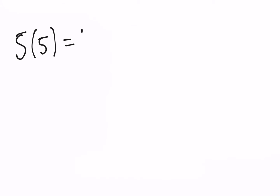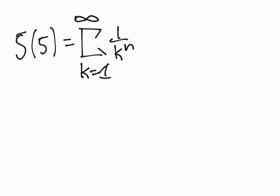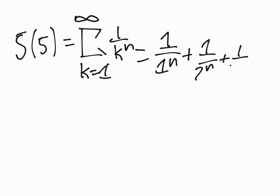which looks pretty complicated at first — this infinite series. But essentially, you don't need to know algebra 2 or any of the higher maths to understand it, because this equation just literally means 1 over 1 to the n power, plus 1 over 2 to the n power, plus 1 over 3 to the n power, and so on, all the way up to infinity. That is the Riemann zeta function.